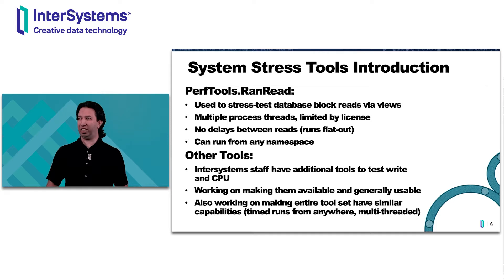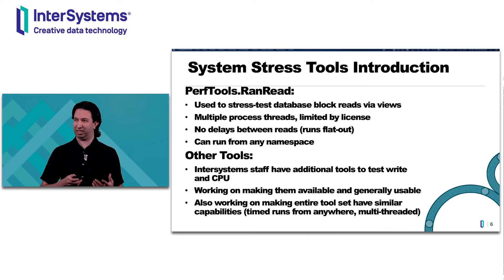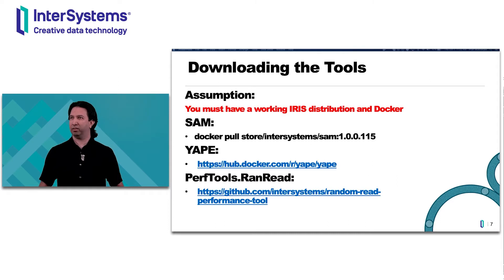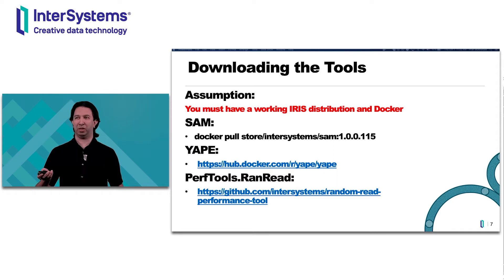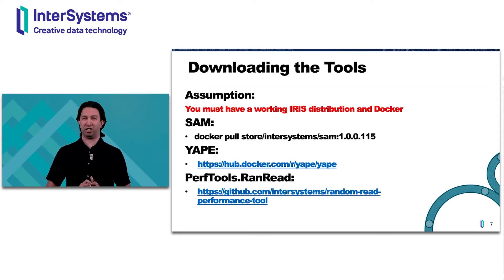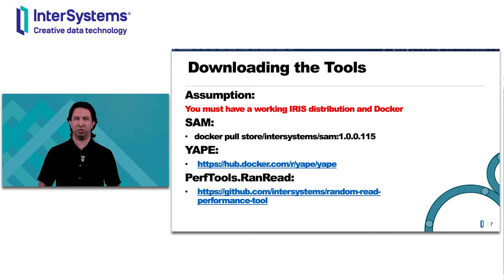We also have additional tools to test write and CPU that will not be covered by this talk. The ranread tool is the most robust at this point. Eventually they'll all have similar capabilities such as timed runs, run from anywhere, and multi-threaded. You download the tools from either Docker or the GitHub location, and before you start anything you must have a working IRIS distribution and Docker running.